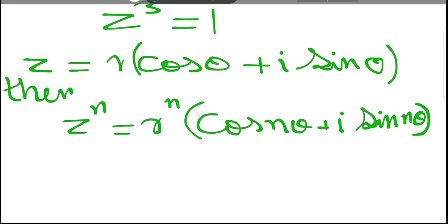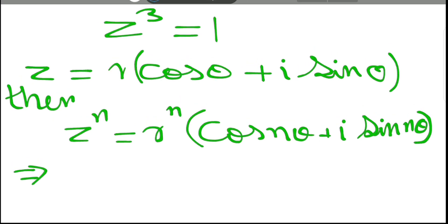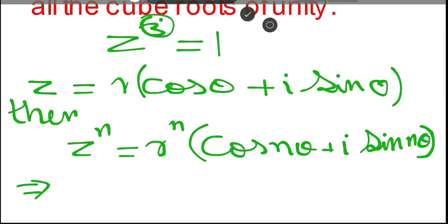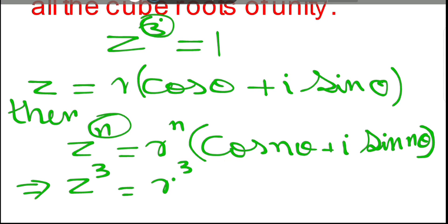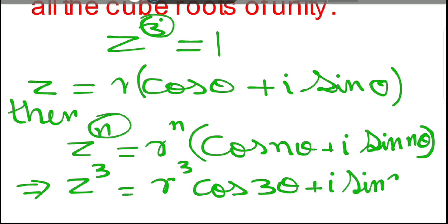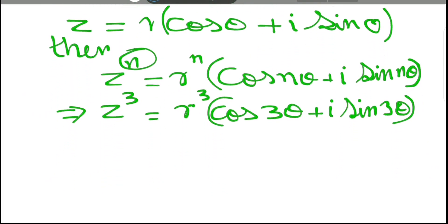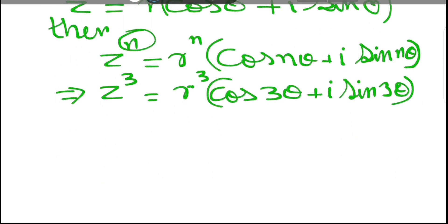Now, in this equation we have z cubed, so we should take n equal to 3. That implies z cubed equals r cubed times (cos 3θ + i sin 3θ).